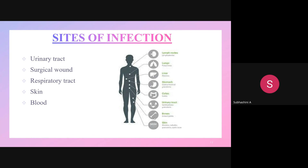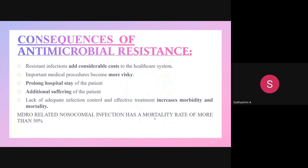Infections occurring in the respiratory tract cause upper respiratory tract infections such as laryngitis, tonsillitis, and bronchitis, and lower respiratory tract infections such as bronchitis, pneumonia, bronchiolitis, and tracheitis. Infections in the skin mainly cause cellulitis, necrotizing fasciitis, etc. Infection in the blood can lead to sepsis. These are the main sites of infection.